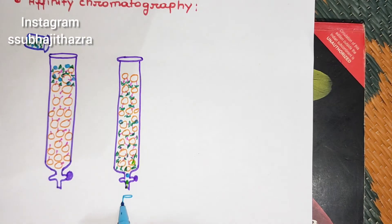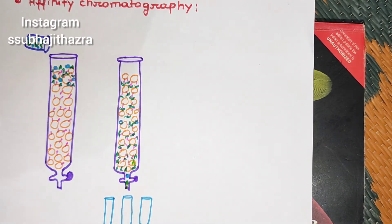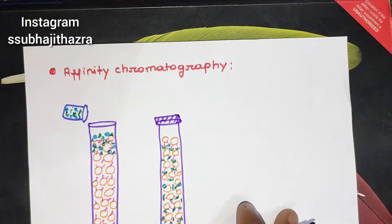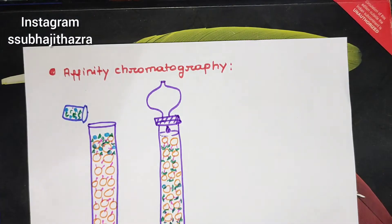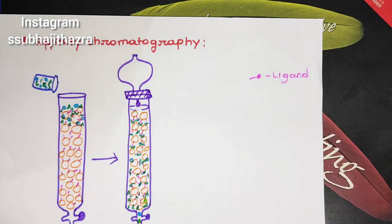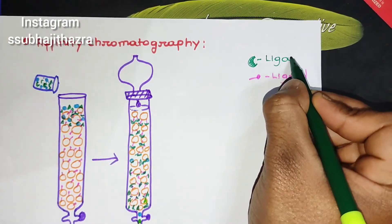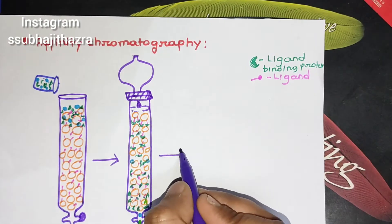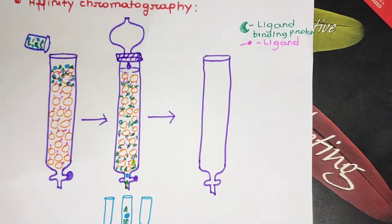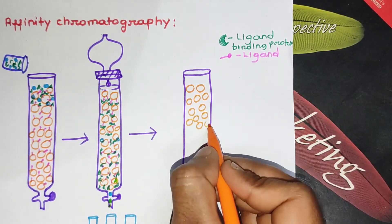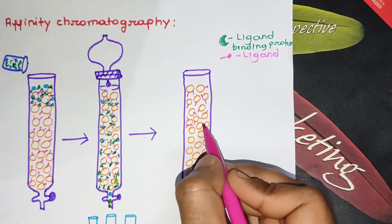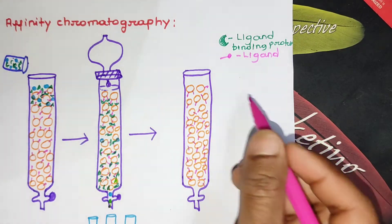The proteins that cannot bind with those specific ligands are collected in tubes and eluted earlier. The green color represents the ligand-binding protein, and pink represents the ligand — those ligands are covalently attached with the beads. Proteins that do not bind with the specific ligands are eluted earlier into the tubes.